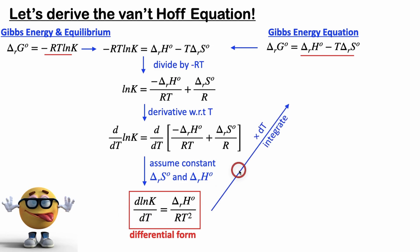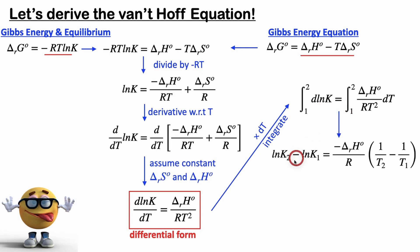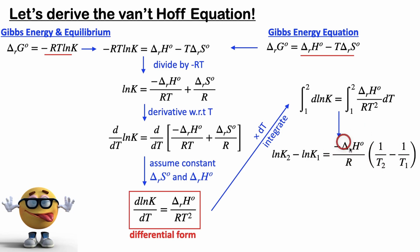To get into a more useful form, we want to multiply both sides by dT and then integrate, which is what we have right here. This integral might look complicated, but imagine ln K is just x — the integral of dx is x — so this integral gives us ln K₂ minus ln K₁. ΔH and R are constants, so they get pulled out of the integral, and we have the integral of 1/T², which is negative 1/T, giving us this part right here.